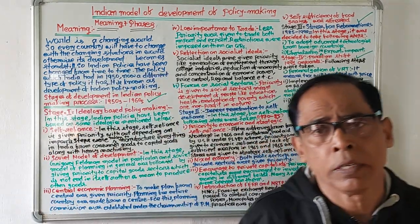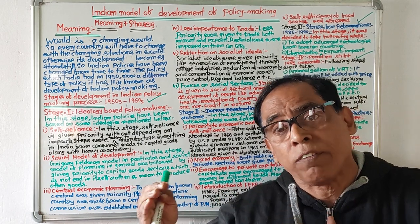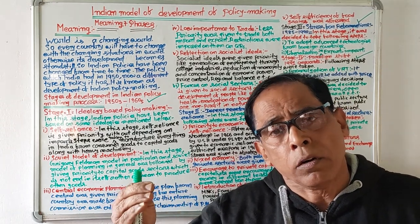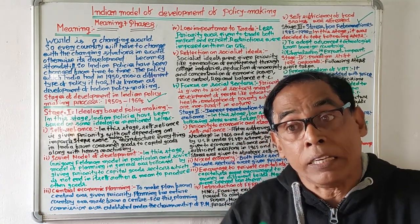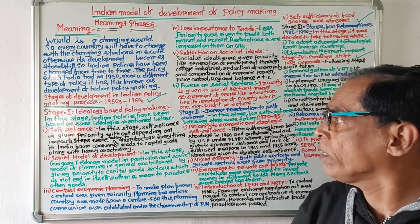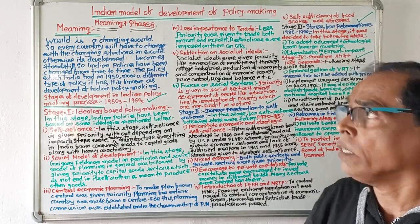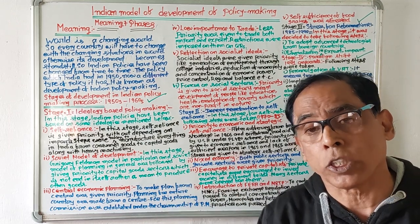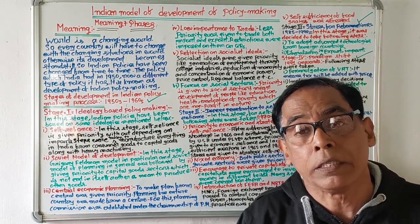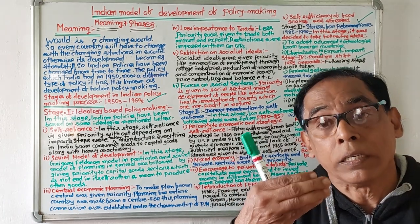In this video, we have discussed how Indian policies have developed across four stages: from 1950 to the end of 1960, from 1970 to 1985, from 1985 to 1990, and from 1991 onwards — examining the principles and changes in each period. Thank you, my viewers. Please watch this video attentively and give your comments. Have a good day.